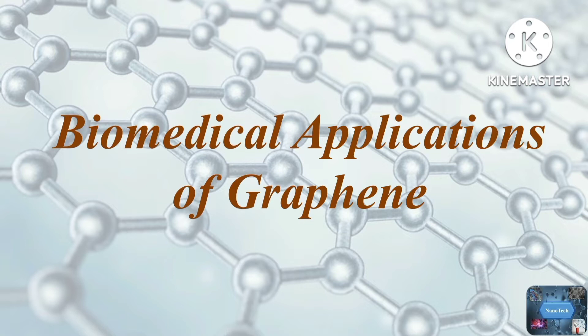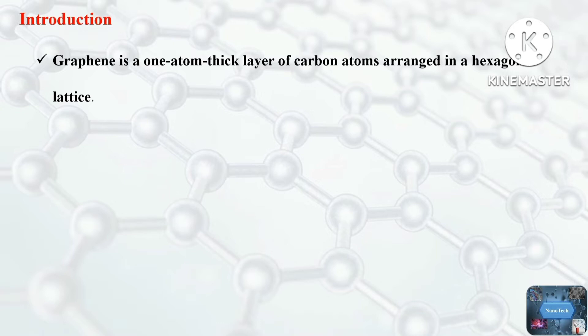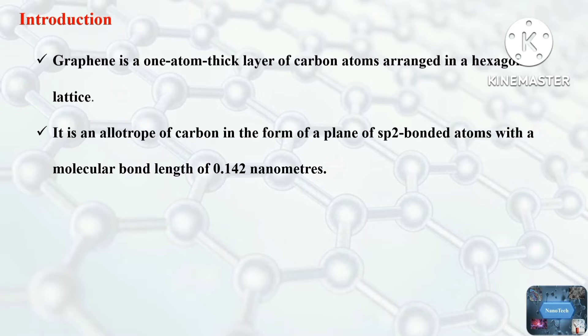Welcome back to another video tutorial. Today's topic is biomedical applications of graphene. Graphene is a single layer of carbon atoms tightly bonded in hexagonal honeycomb lattices. It is an allotrope of carbon in the form of a plane of sp2 bonded atoms with a molecular bond length of 0.142 nanometers. Graphene is obtained from graphene oxide by removing the oxygen-containing functional groups via simple chemical or thermal reduction.